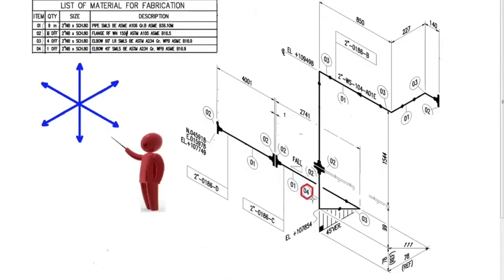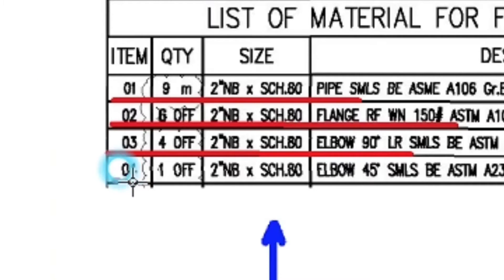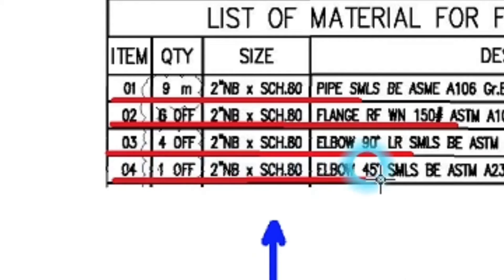This is number 4, the last detail. We look at the material list. Detail number 4: 1 piece, 2 inches, schedule 80, 45 degree elbow.